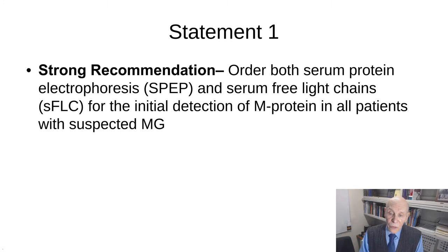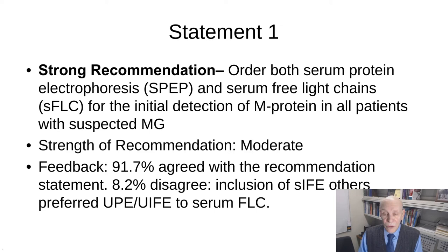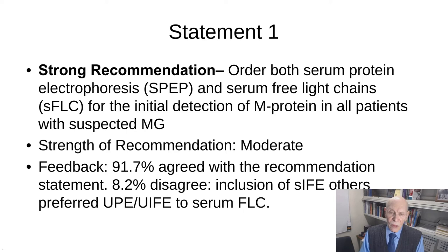Statement one: order both serum protein electrophoresis and serum free light chains for the initial detection of monoclonal proteins in all patients with suspected monoclonal gammopathy. The strength of this recommendation is moderate, with the vast majority agreeing. A few individuals wanted to include serum immunofixation automatically, and some preferred urine immunofixation over the free light chain test, but I'll explain why we didn't recommend those approaches routinely.